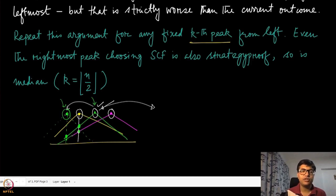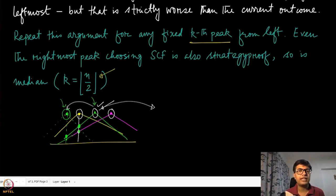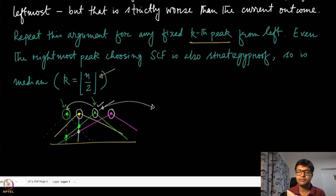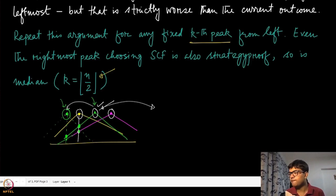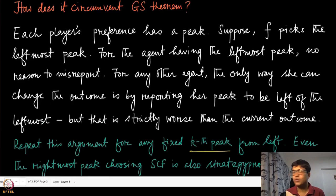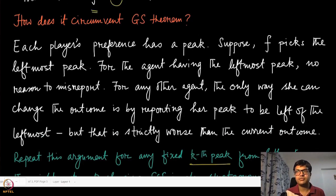This mechanism is not unique — you can pick any k-th lowest peak, including the rightmost peak, and similarly argue it is not manipulable. What is more popular is picking the median of all peaks, sometimes called the median peak mechanism, which is also strategy-proof. So this is one example of how you can circumvent the GS theorem: you can find mechanisms that are onto, strategy-proof, and not necessarily dictatorial.